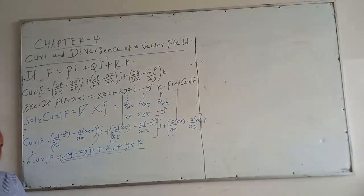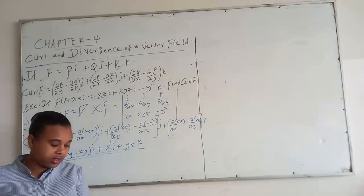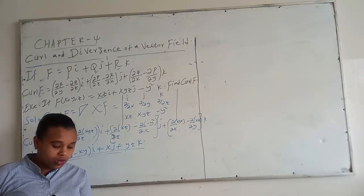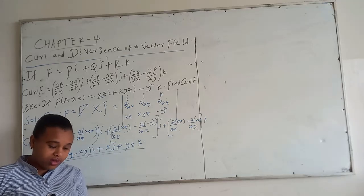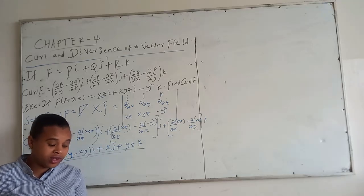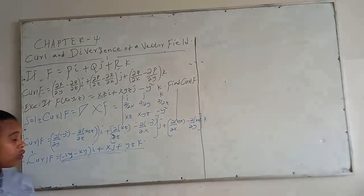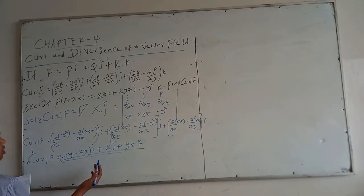If F is a vector field defined on a region whose components have partial derivatives, and the curl of F is equal to zero, then the vector field is called conservative.